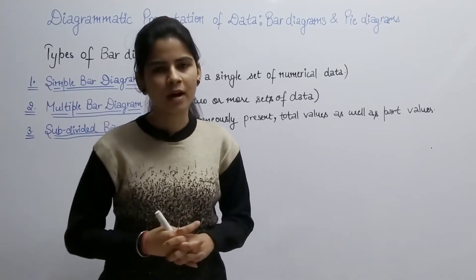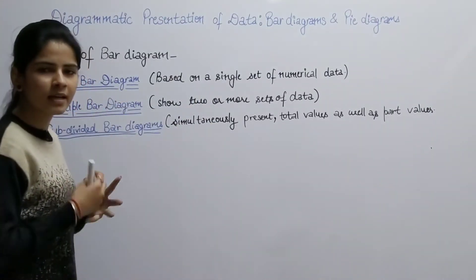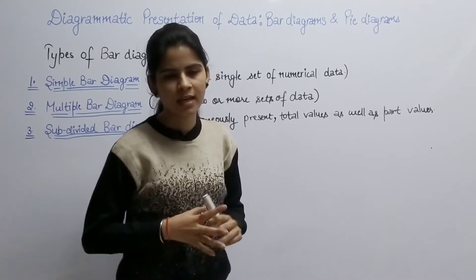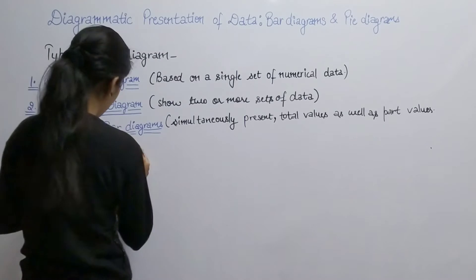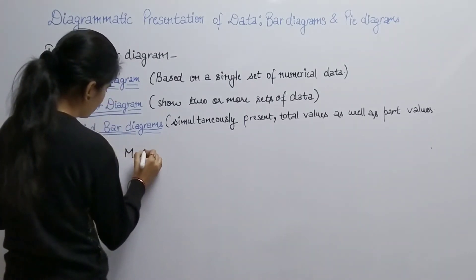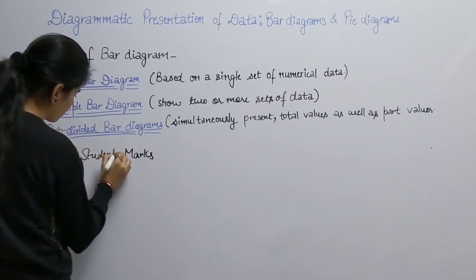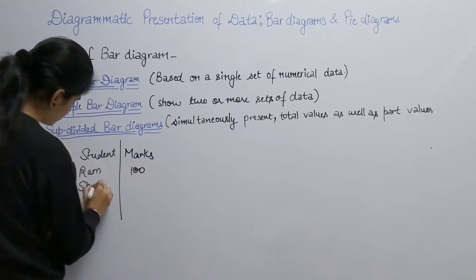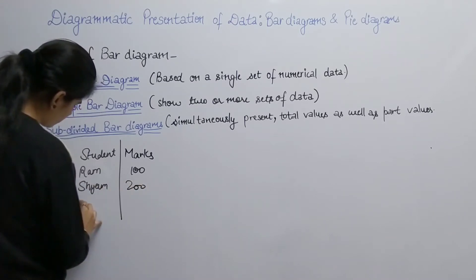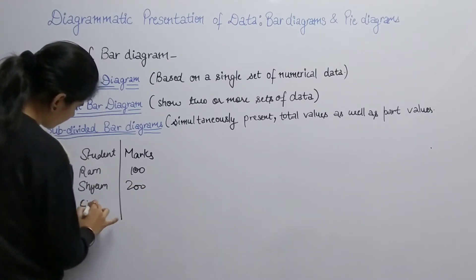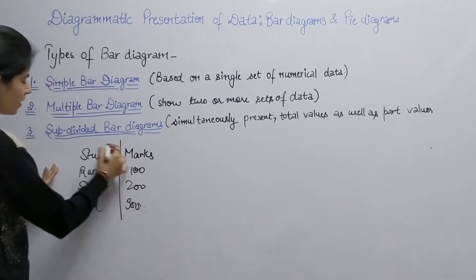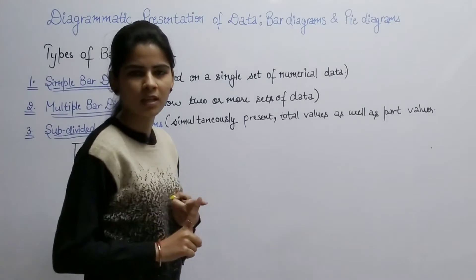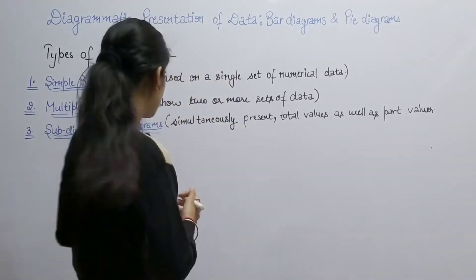Now we will look at the types of bar diagram. First is our simple bar diagram. What is this simple bar diagram? It is a bar diagram based on a single set of numerical data. Take an example with marks and students. Ram's total marks are 100, Shams's total marks are 200, and Sita's total marks are 300. When we make a simple bar diagram, we can represent it in two ways: vertically and horizontally.